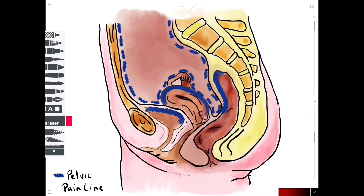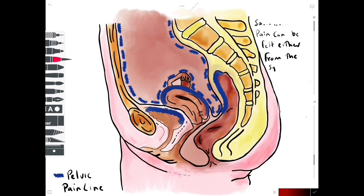So the pelvic pain line is a slightly unusual scenario where the afferent pain flow is split between the sympathetics and the parasympathetics depending on whether the structure has a peritoneal covering or not. The pelvic pain line is important for understanding how referred pain is felt from visceral structures. In summary, pain can be felt either from the sympathetic fibers or from the parasympathetic fibers depending on the exact location of where the pain is coming from.